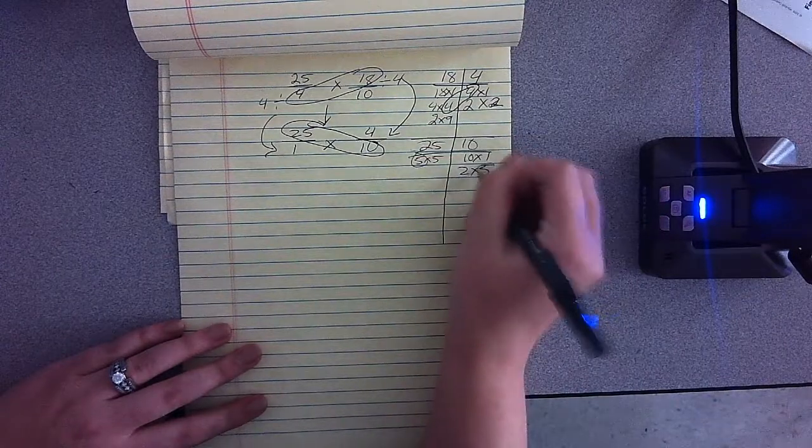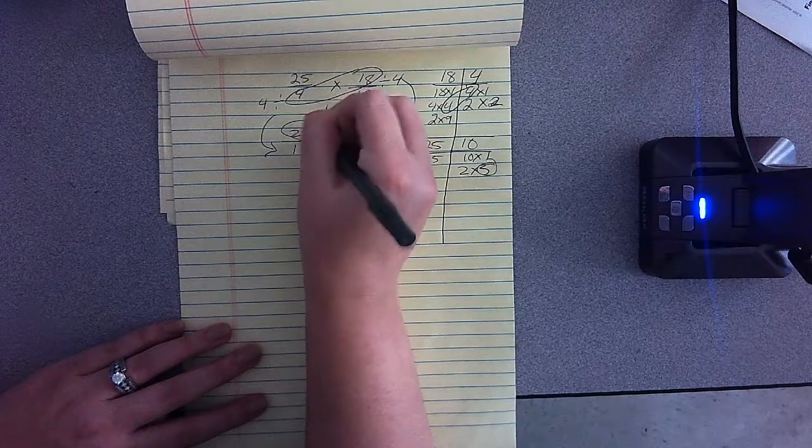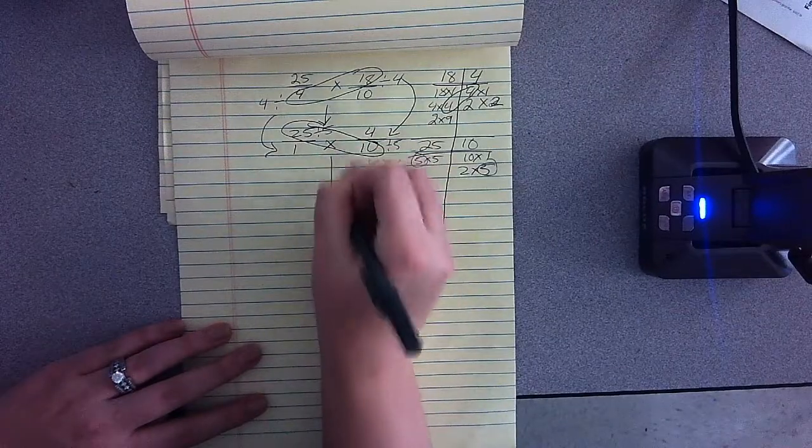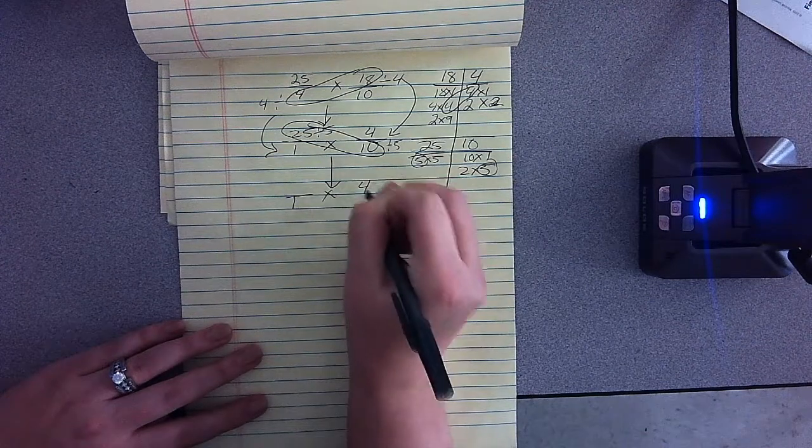So five is my greatest common factor here, so I'm going to divide 10 by five and 25 by five. Alright, so I'm going to move on down here. The one is still here, the four is still here.